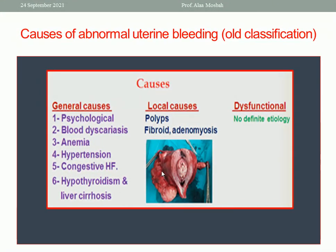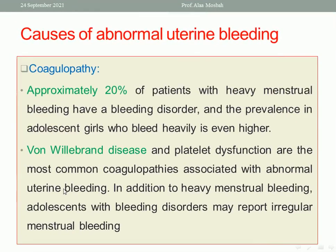The old classification of general causes, local causes, and dysfunctional uterine bleeding is no longer used. Regarding non-structural causes — the COEIN portion — coagulopathy affects approximately 20% of patients with heavy menstruation and is common in adolescent girls. Von Willebrand disease and platelet dysfunction are the most common coagulopathies associated with abnormal uterine bleeding. Adolescents with bleeding disorders may also report irregular menstrual bleeding.